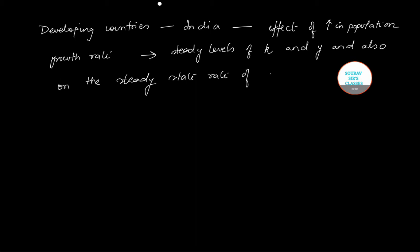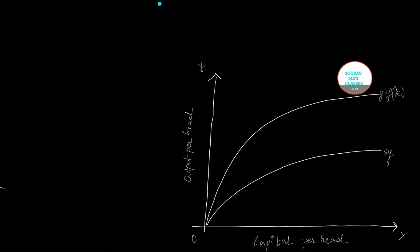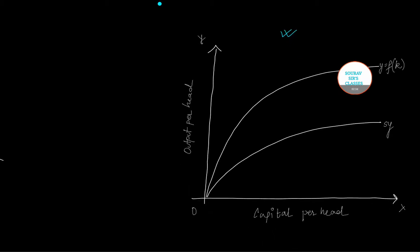So now let us move on to the graphical representation. In this particular figure I will show you the effect of increase in population growth. First we will make the initial population line and it is indicated by this, so let me draw it.